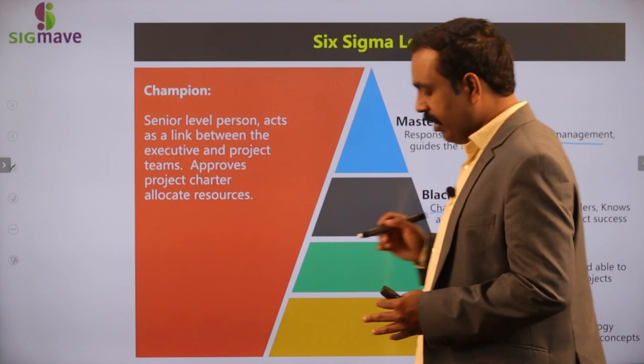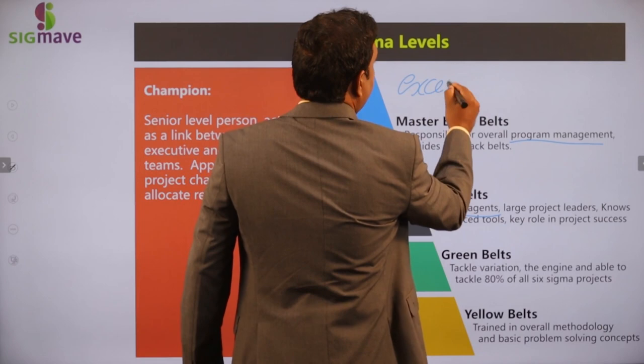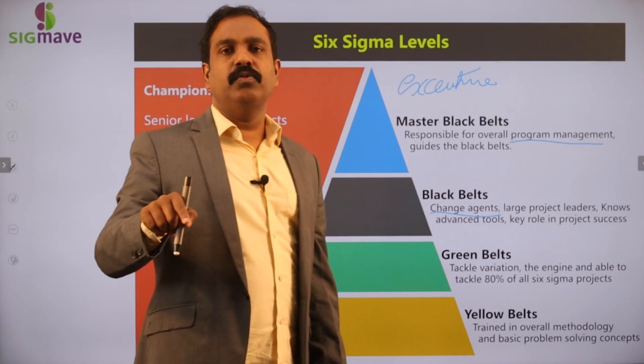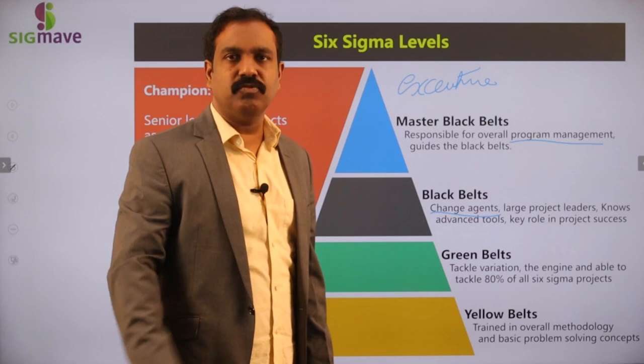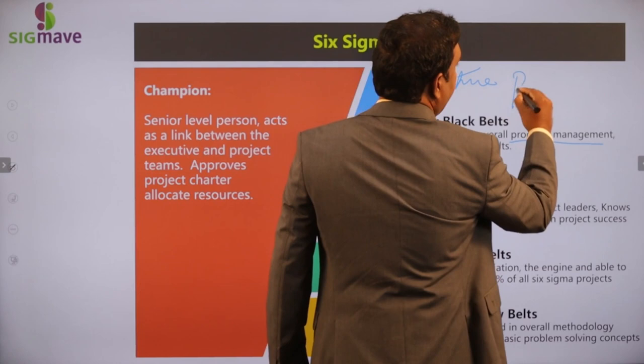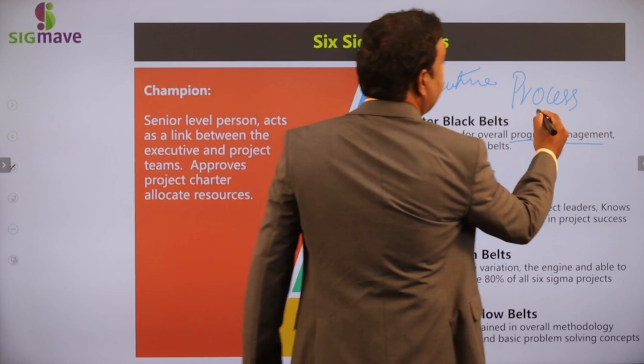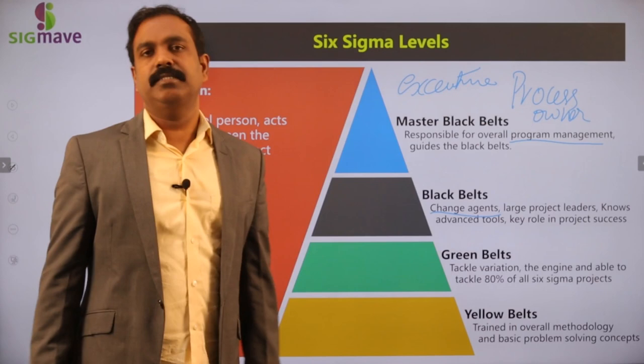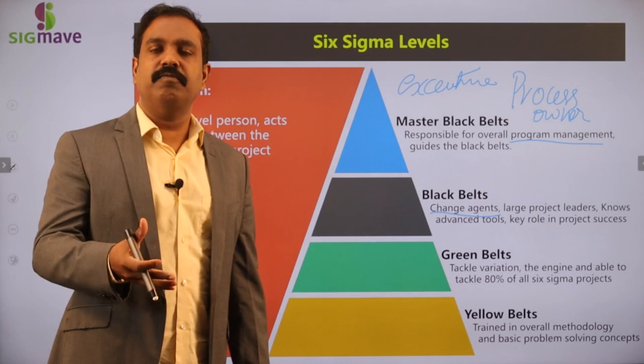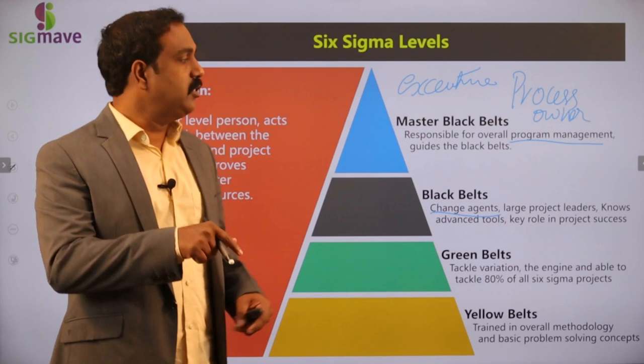Then we have other roles like executive — the top manager who gives a vision to the teams and the overall organization, and that vision is transformed to the lower levels. We also have the process owner, who is a senior level person. When the Six Sigma team brings out changes in a process or systems, the process owner is responsible for approving and implementing those changes.